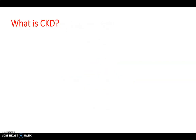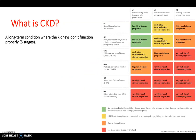So what is CKD? Well, it's a long-term condition where the kidneys don't function properly. As you can see on the right, there are five stages. G1 to G5 is related to the GFR, while A1 to A3 is related to the level of proteins in the urine such as albumin. The higher the staging, the worse the disease.